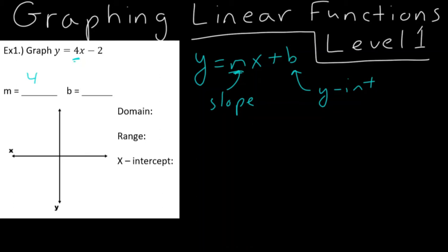One other key factor for the slope is you always want to write it as a fraction. And since 4 is a whole number, we can write it as 4 over 1. Then we look at our constant, and we know it's a constant because it doesn't have any variable — there's no letter, no x, no y, no z. We have this negative 2, and so our y-intercept must be negative 2.